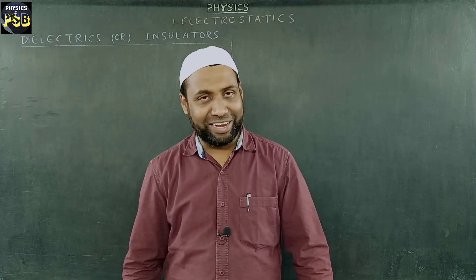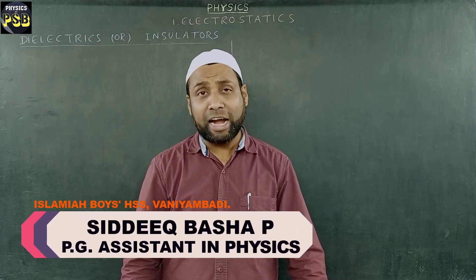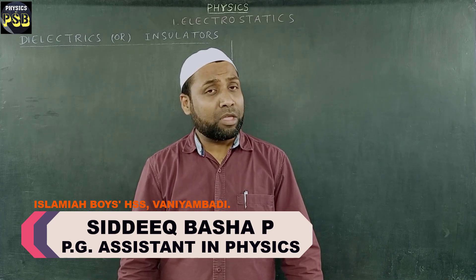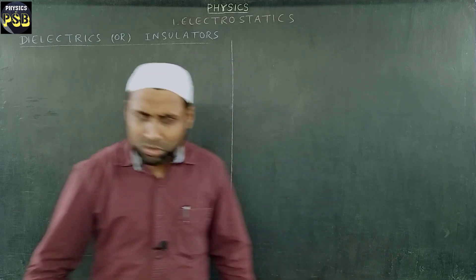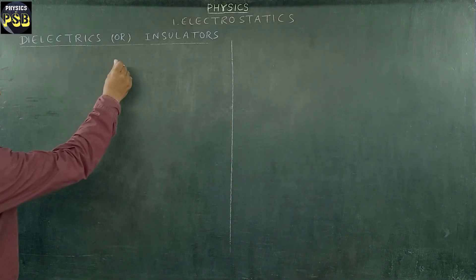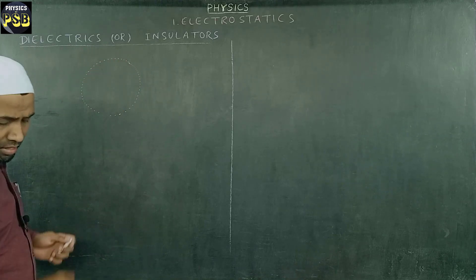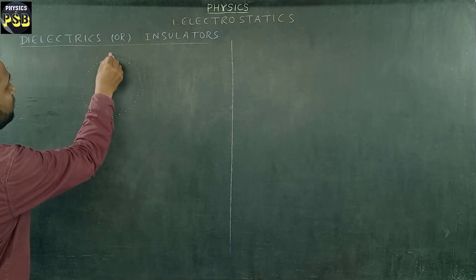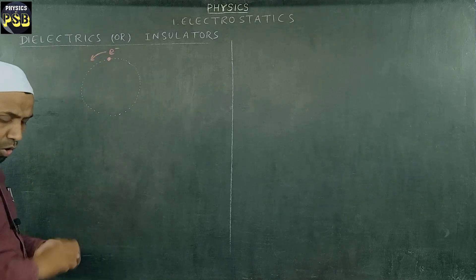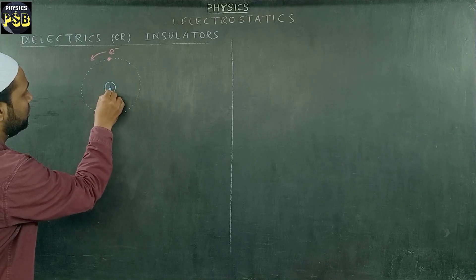Assalamu alaikum, hope you are doing fine. We know almost everything in the universe is made of atoms, and these atoms consist of electrons revolving around the nucleus. This is the orbit in which negatively charged electrons revolve around the positively charged nucleus.